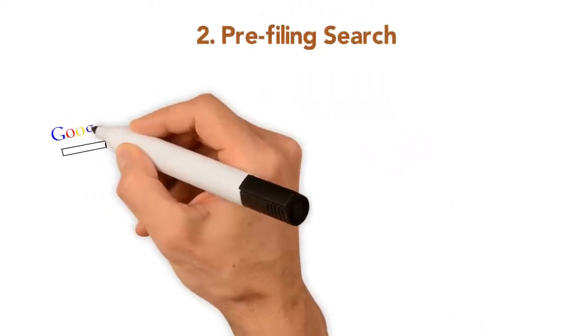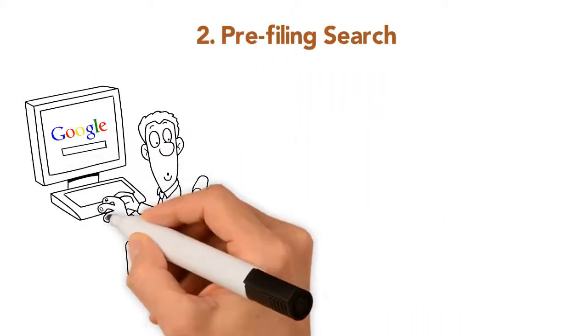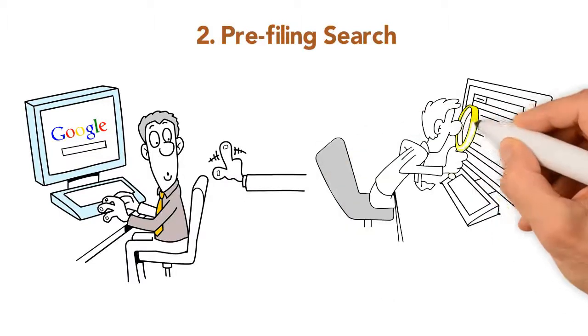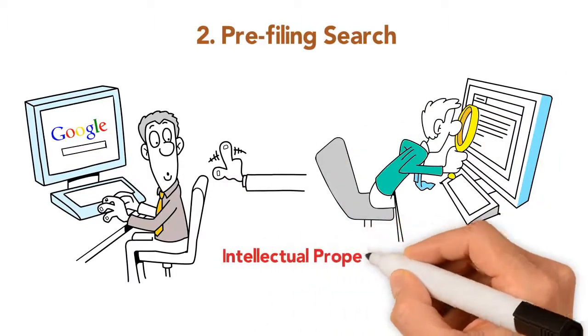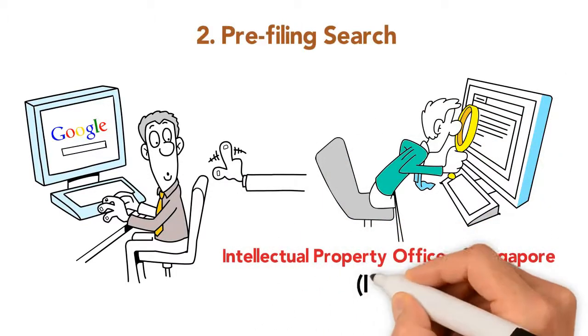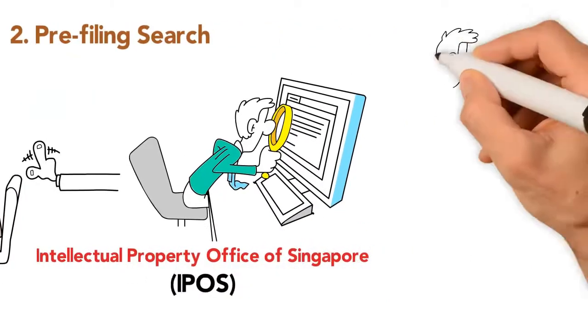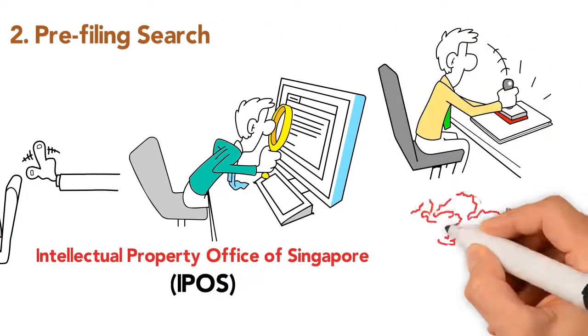2. Pre-filing search. Note that a Google search is not authoritative, and that you'll need to run a search via Intellectual Property Office of Singapore to see if your wordmark or trademark has been registered in Singapore.